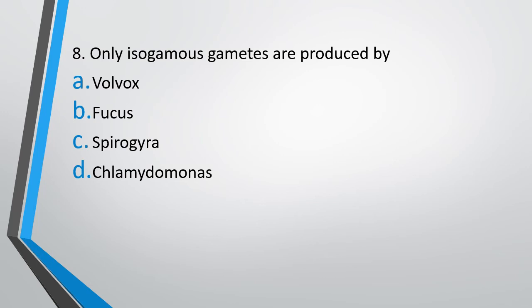Question 8: Only isogamous gametes are produced by — Option A: Volvox. Option B: Fucus. Option C: Spirogyra. Option D: Chlamydomonas. The correct answer is Option C, Spirogyra. Note: read the question carefully — the key word is 'only'. Chlamydomonas can also produce anisogamous gametes, so Spirogyra is the only organism in the options that produces only isogamous gametes.